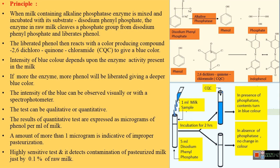This is the structure of di-sodium phenyl phosphate on which the enzyme phosphatase acts, resulting in the liberation of phenol. The liberated phenol reacts with the CQC indicator, that is 2,6-dichloroquinone chloramide, and that results in the formation of indophenol blue. So the development of blue color in the tube is because of the formation of indophenol blue. This is about the phosphatase test which is used to check the efficiency of the pasteurization process in the dairy industries.